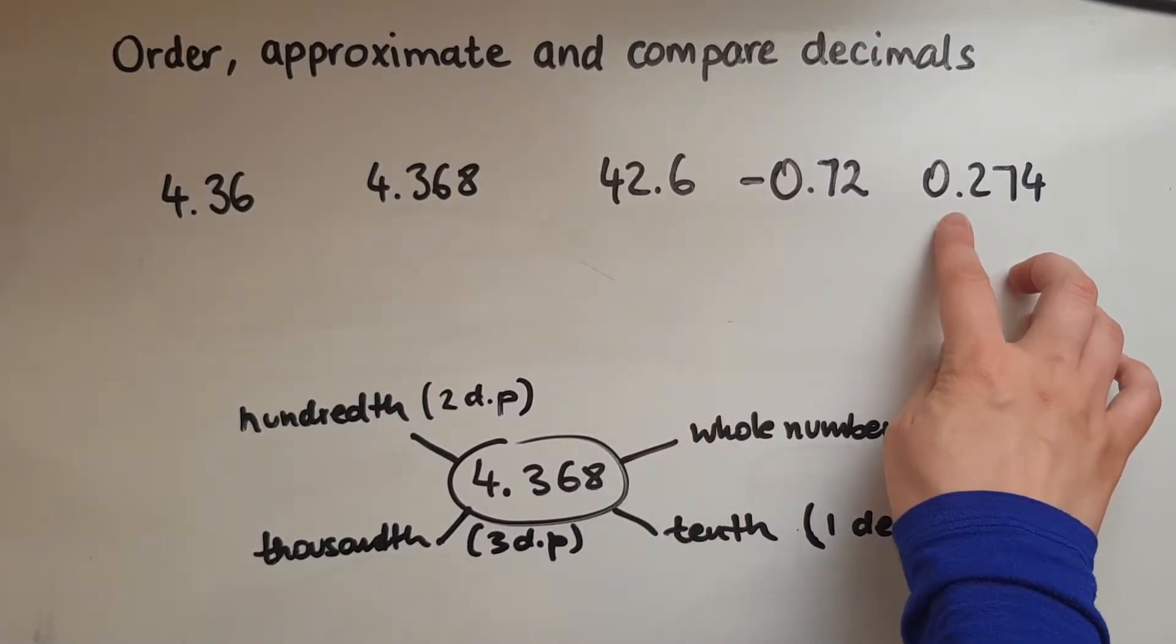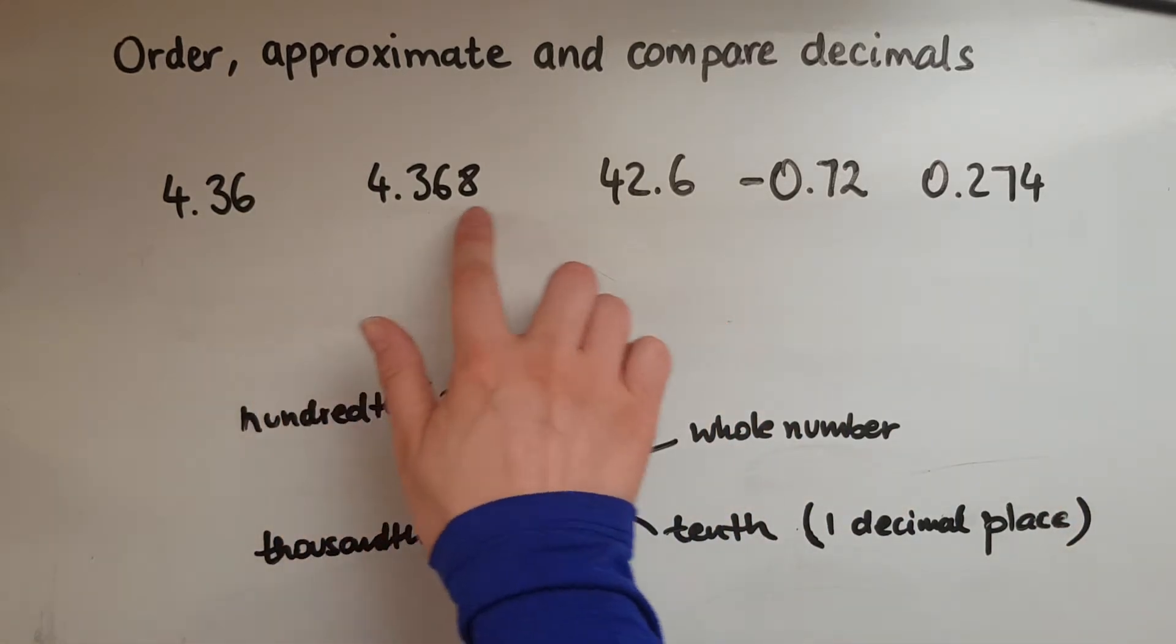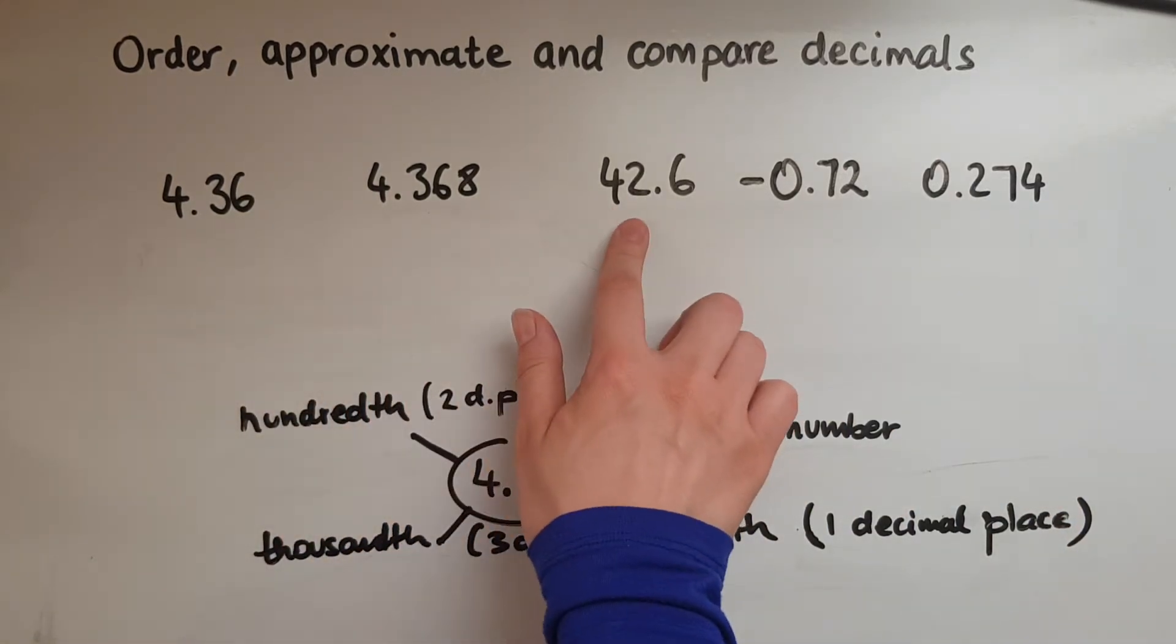And then we have 0.274, so that means 0 whole ones, so that's smaller than any of these three.